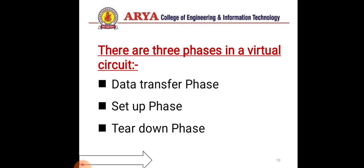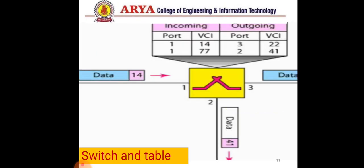There are three phases in a virtual circuit: the data transfer phase, the setup phase, and the teardown phase. First, we will discuss the data transfer phase. In the data transfer phase, there are two situations: the switch and table, and source to destination.